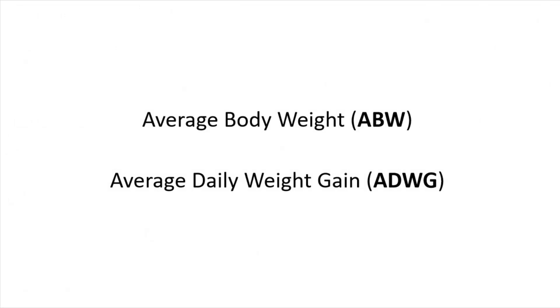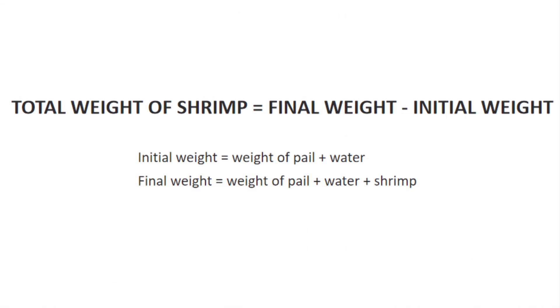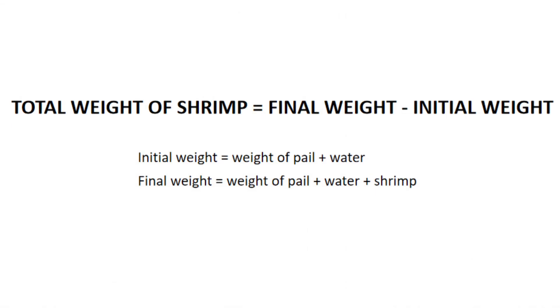From the data obtained, we can calculate the average body weight, or ABW, and the average daily weight gain, or ADWG. To compute for ABW, we need to calculate first the total weight of shrimp using the formula: total weight of shrimp equals final weight minus initial weight, where the initial weight is the weight of pail with water, and the final weight is the weight of pail with water and shrimp.